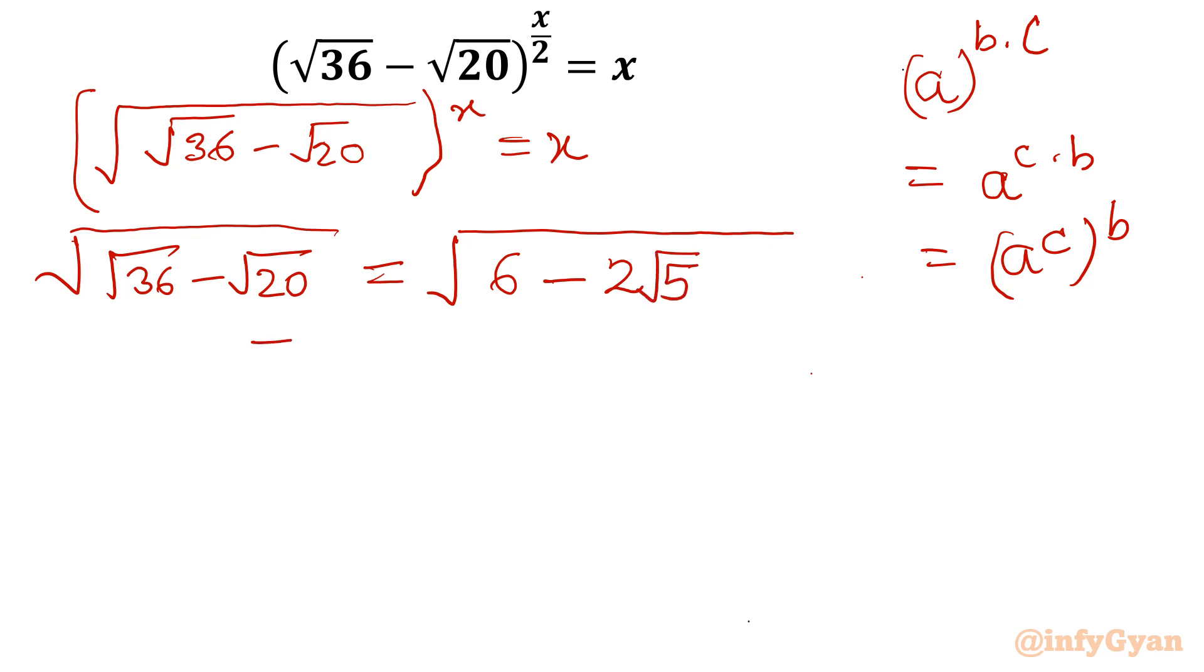Now I will split this 6 as 5 plus 1 minus 2 root 5 as it is unchanged. Now I will consider 5 as root 5 whole square plus 1 whole square minus 2 times root 5 times 1.